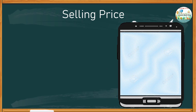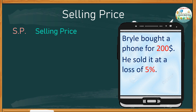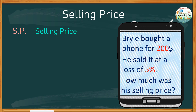Here is another problem, but this time instead of profit, find the selling price with a certain loss percentage. Braille bought a phone for 200 dollars and sold it at a loss of 5 percent. How much was his selling price? Identify the facts: cost price is 200, sold at 5 percent loss.